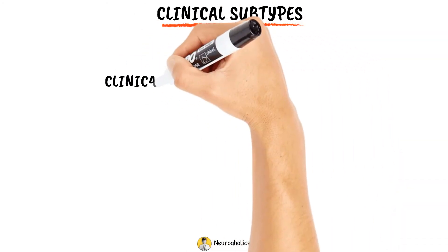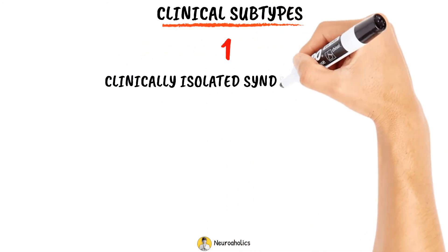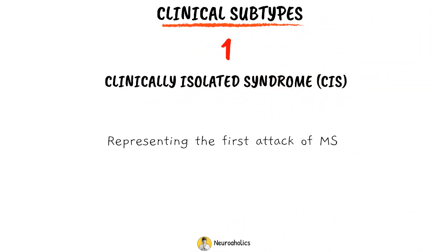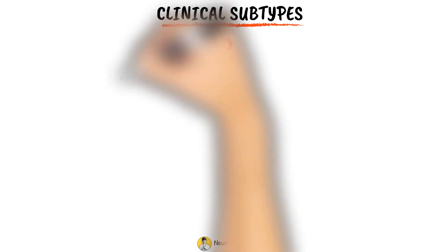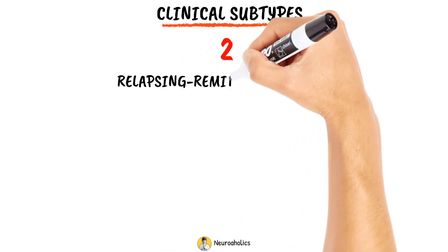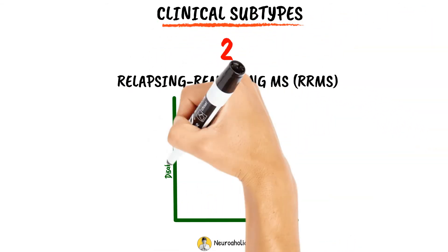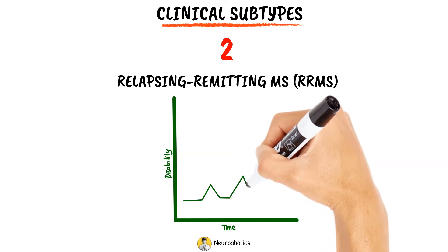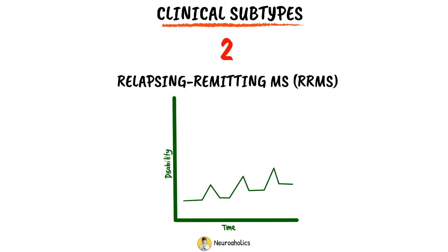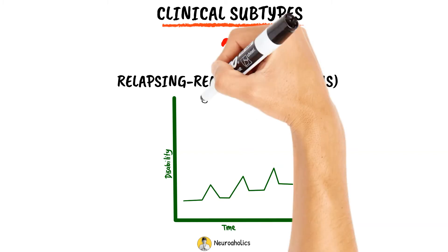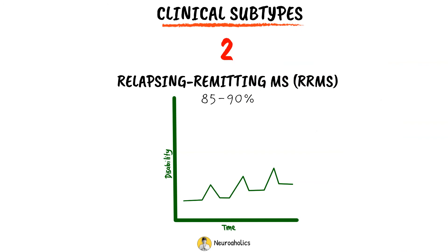The pattern and course of MS are further categorized into several clinical subtypes. Clinically isolated syndrome, representing the first attack of MS. Relapsing-remitting MS is characterized by clearly defined attacks, also known as relapses, flares, or exacerbations, with full or incomplete recovery. Relapsing-remitting MS accounts for approximately 85–90% of cases at onset.